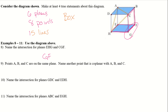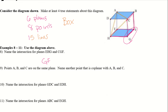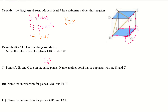Points A, B, and C are on the same plane — name another point that is coplanar with ABC. ABC is up here. It looks like D — if I complete that square, D is also on the same plane.